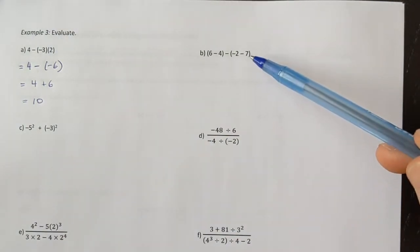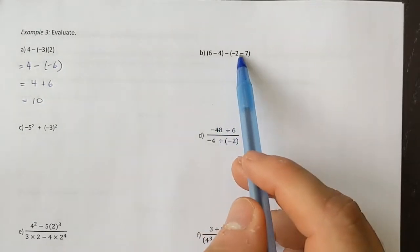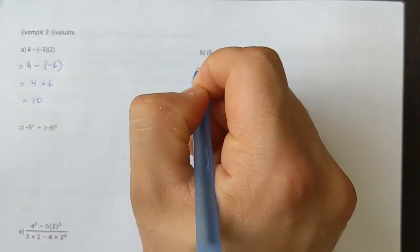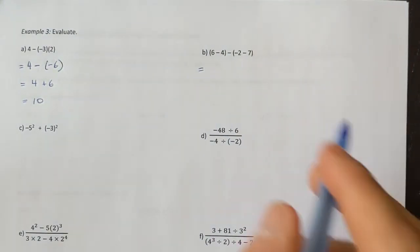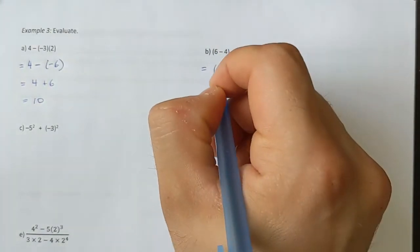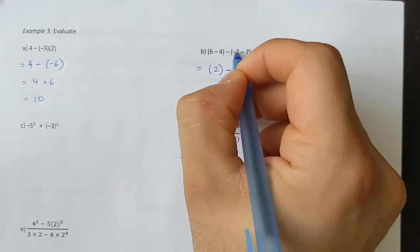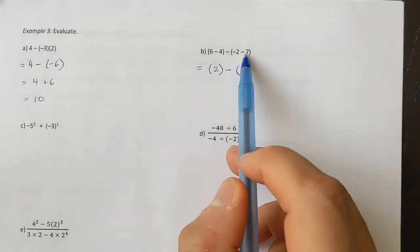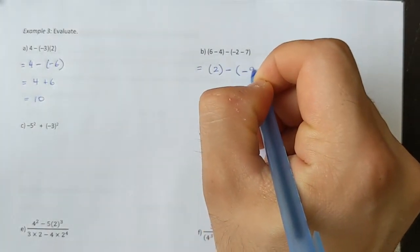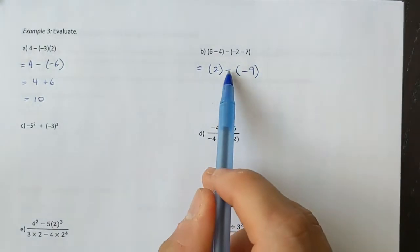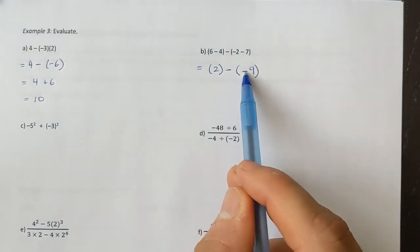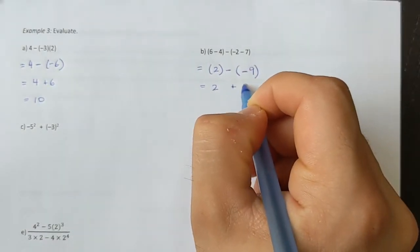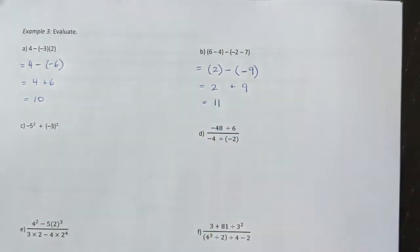Example B: we have two brackets being subtracted. We must do the brackets first. 6 minus 4 is 2, minus — and negative 2 going back 7 spaces gives negative 9. Now we have a double negative: negative and negative make a positive, so 2 plus 9 equals 11.